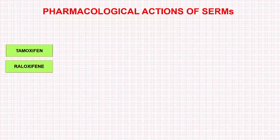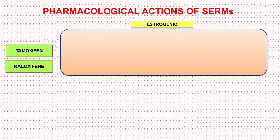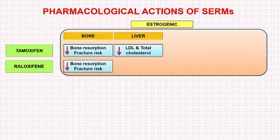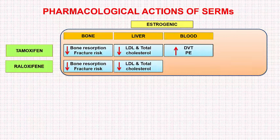We will now talk about the pharmacological actions of SERMs, starting with Tamoxifen and Raloxifene. Both produce oestrogenic effects on bone, leading to decreased bone resorption and decreased fracture risk. They act on the liver, leading to decreased LDL and total cholesterol. They also act on the blood, leading to an increased incidence of DVT — deep venous thrombosis — and pulmonary embolism.